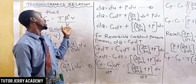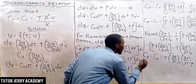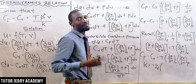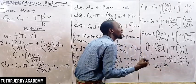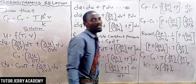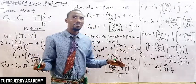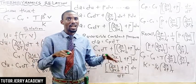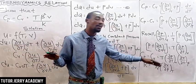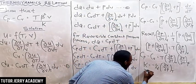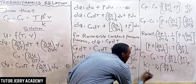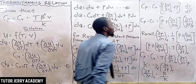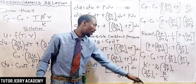Now we recall the compressibility factor k, which is nothing but minus one over V times the partial differentiation of V with respect to P, keeping T constant. We have also established on our channel that the partial differentiation of P with respect to T, keeping V constant, equals beta (cubic expansion) over k (compressibility factor).